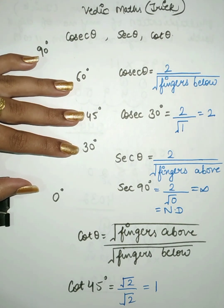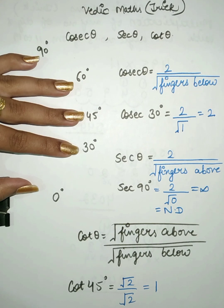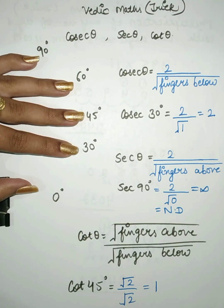This is a very simple method for finding the values of the trigonometric ratios — cosecant theta, secant theta and cot theta. For finding the values of sin theta, cos theta and tan theta, you must watch the previous video. If you like my video, please like, subscribe and share, and do not forget to press the bell icon for notifications of more videos. Thanks for watching.